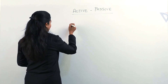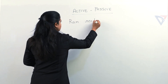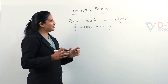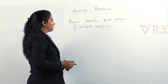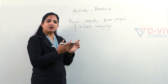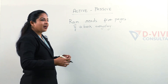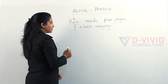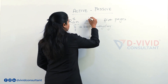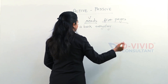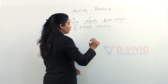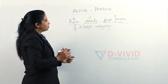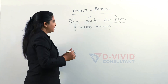Let's start with an example. If we look at a simple sentence and focus on its structure, we have Ram as our subject, 'read' as our verb, and five pages of a book as our object. This kind of structure is known as active voice.